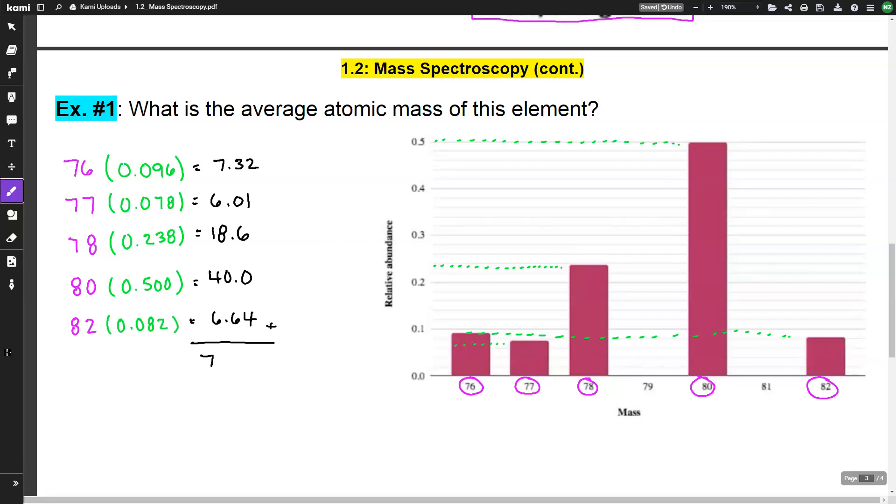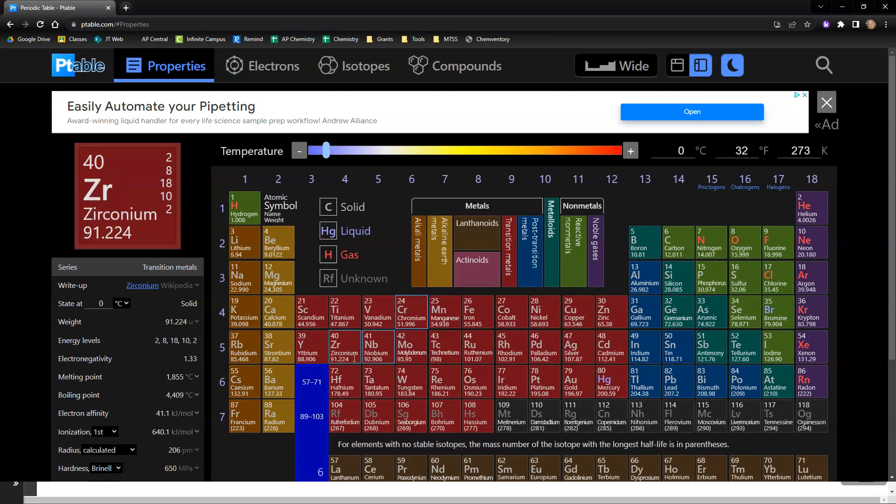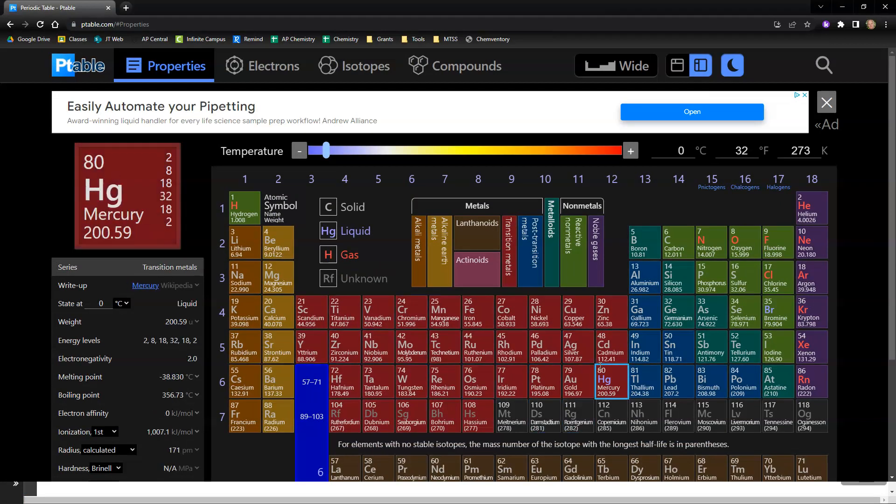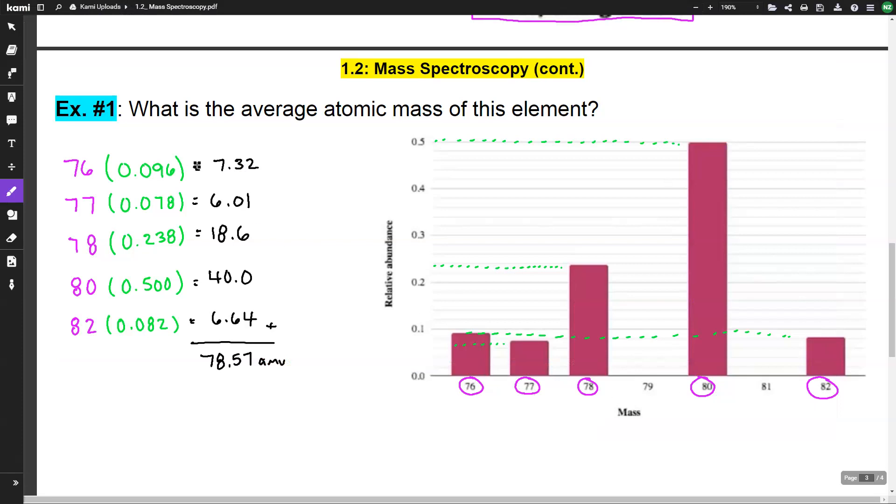So when I do that, I get 78.57. So if I go to my periodic table and look this up, we said 78.57. If I look at the periodic table right here, selenium is really close to that. So I would identify this because the question asks, what's the average atomic mass of this element? 78.57 is our answer. And the closest one would be selenium.